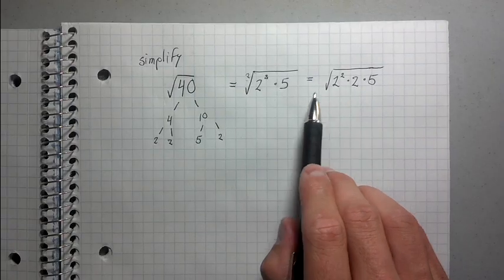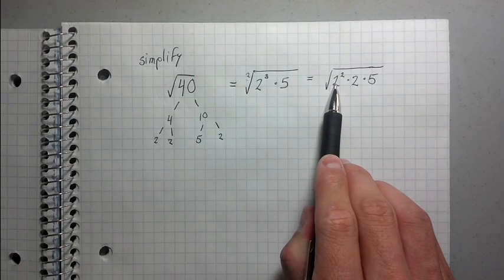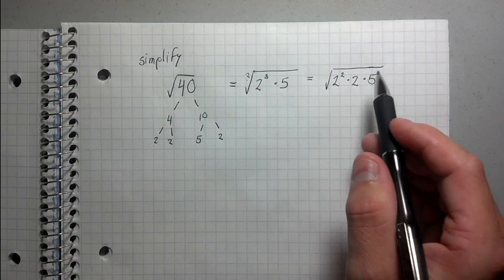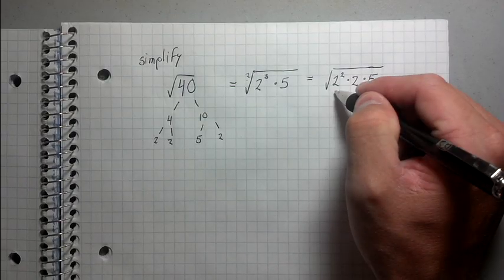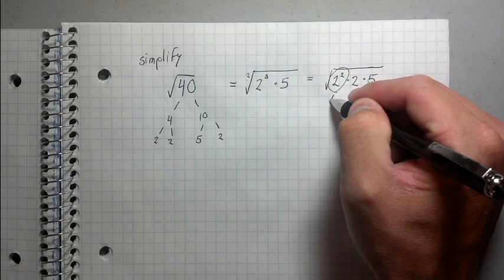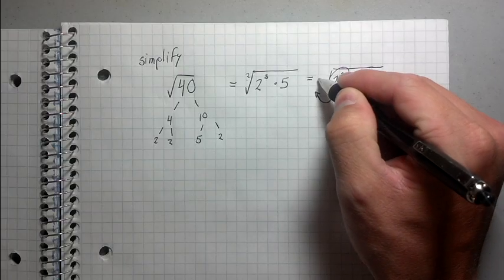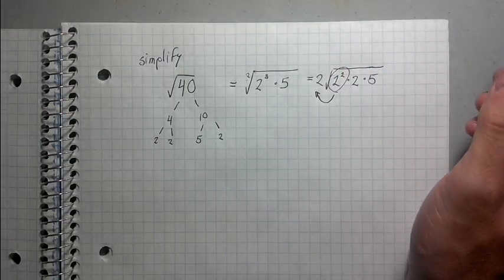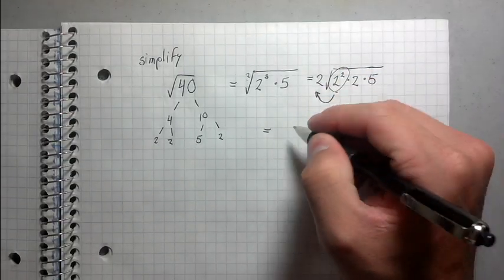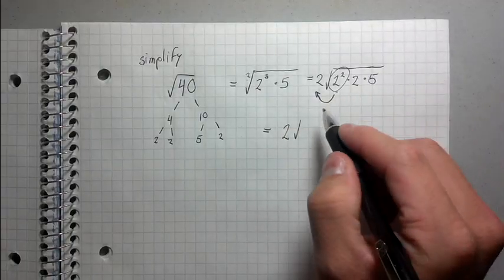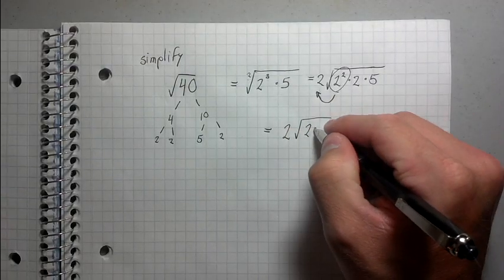So what I'm going to do, if I take the square root of a 2 squared, that's just the same as 2. So I'm going to take this 2 squared and pull it out, and it's going to become a single 2 out in front.